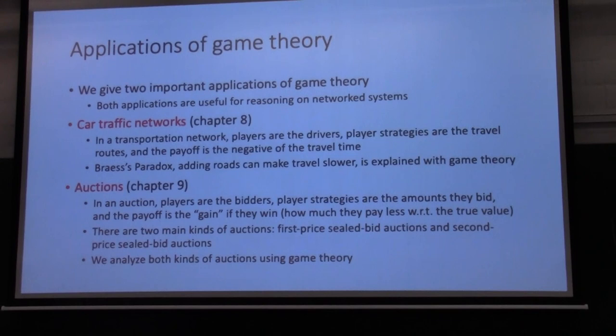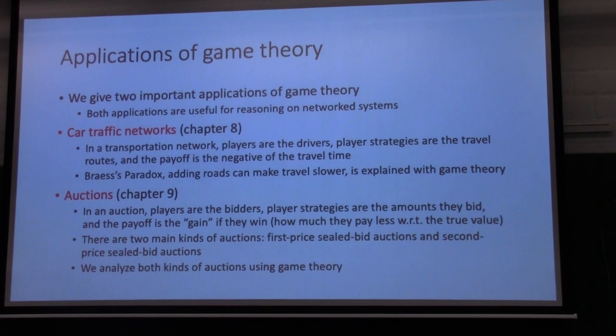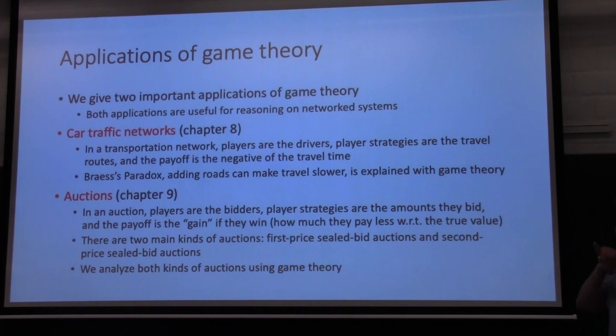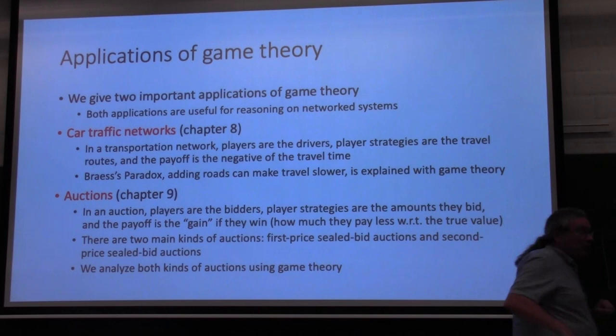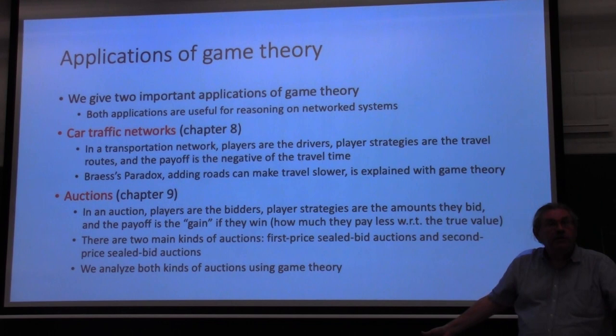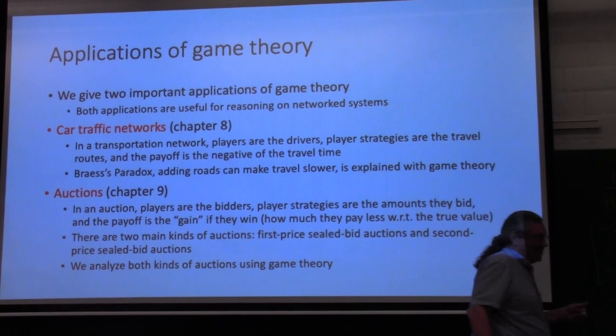We're going to talk about game theory applications. The first one is car traffic. We have games, we have players. The players are the drivers. The strategies are the routes they take. And the payoff is the travel time — actually the negative, because we want to maximize payoff and minimize travel time. And we have something called Braess's paradox, which means if you add roads to a network, the times can get slower. It's very strange. Game theory tells you why.